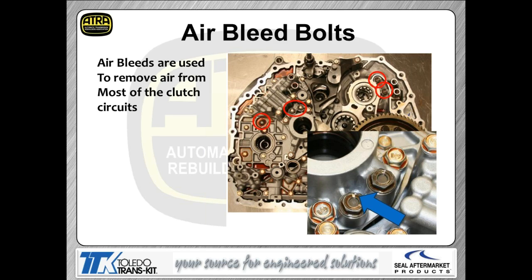One really interesting feature: the bleed bolts. Looking at the lower-right picture with the big blue arrow, you can see the bleed hole. The idea is to eliminate any air trapped in the clutch circuit — aerated oil is compressible, which causes slip issues. Rather than a check-ball capsule, they've taken a very simplistic approach: when you pressurize the passage, hydraulic oil pushes the air out through the tiny bleed hole.